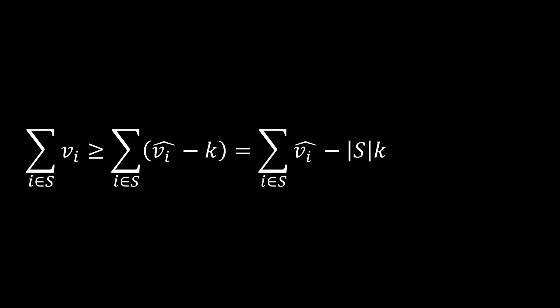Next, we dissolve the parentheses in the sum. Furthermore, the size of the set S is at most n. Now we insert the term for K and simplify. The sum in the rightmost expression is the optimal solution of the problem with the rounded values.